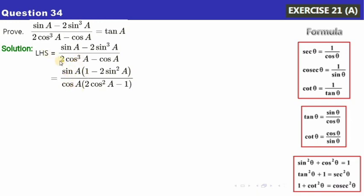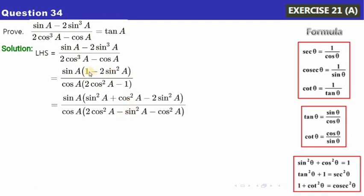Taking cosA out from the denominator gives 2cos²A minus 1. Now, replacing the 1 in the numerator using the identity sin²A plus cos²A equals 1, we write it as sin²A plus cos²A minus 2sin²A, which simplifies. In the denominator, similarly, 1 becomes sin²A plus cos²A, so we get 2cos²A minus (sin²A plus cos²A), giving cos²A minus sin²A.